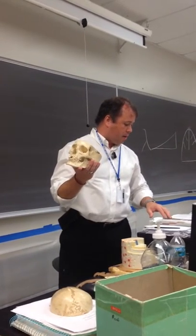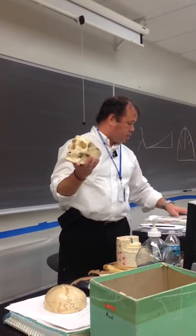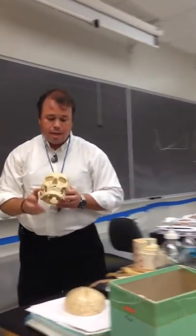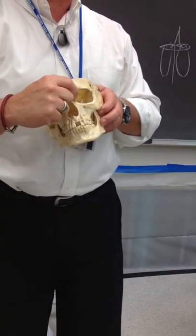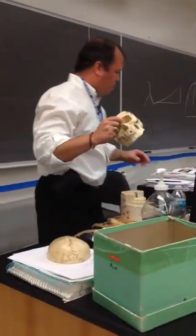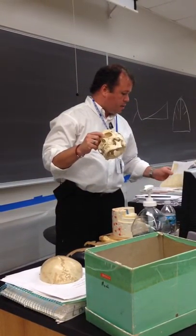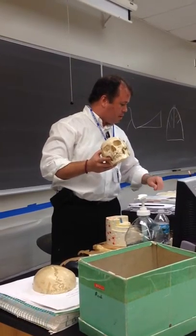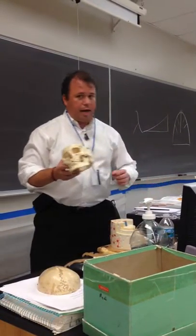To recap: we covered the mastoid process, the zygomatic process of temporal, the external auditory meatus, the vomer, the zygomatic arches, the ethmoid, and the sphenoid. The nasal bones are at the top of the nose. On the inside, where tear ducts flow, is the lacrimal bone. There are also sinuses in the maxilla. Looking inside the orbit, we see the superior and inferior orbital fissures and the optic canal or optic foramen. That covers the skull.